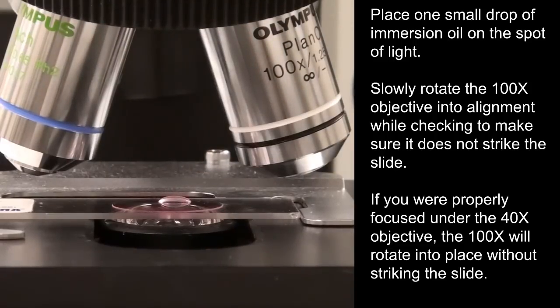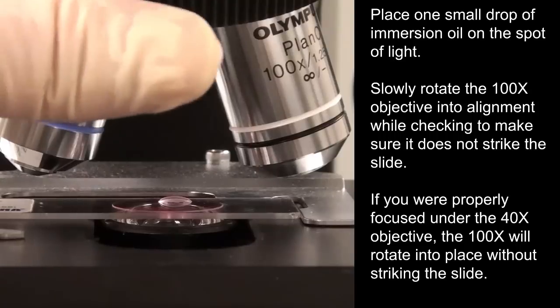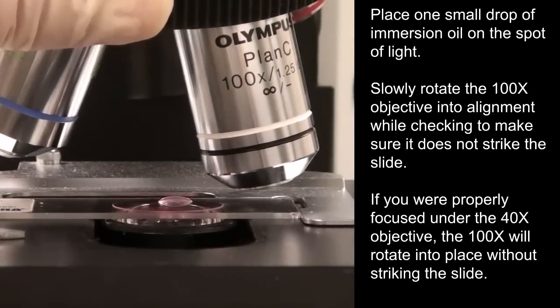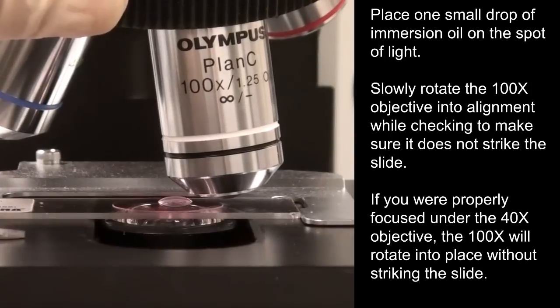Slowly rotate the 100x objective into alignment while checking to make sure it does not strike the slide. If you were properly focused under the 40x objective, the 100x will rotate into place without striking the slide.